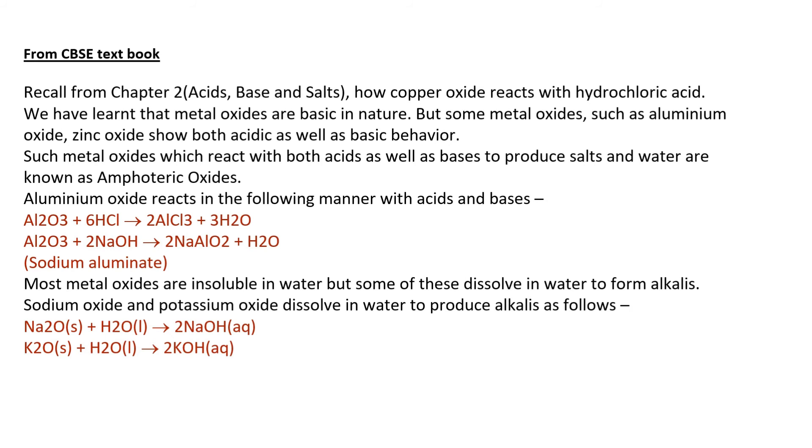Aluminium oxide reacts in the following manner with acids and bases. Now here are the reactions of aluminium oxide with acids as well as bases. So how they will react and how the product and byproduct will form. In both the reactions the byproduct will be H2O and the product will be the salt. Whenever you will take one molecule of Al2O3 plus six molecules of HCl you will get two molecules of AlCl3 and three molecules of H2O as byproduct. And then when you will react Al2O3 with base such as NaOH then you will get two molecules of NaAlO2 plus H2O as byproduct and the product is known as sodium aluminate. Most metal oxides are insoluble in water but some of these may dissolve in water to form alkalis. Sodium oxide and potassium oxide dissolve in water to produce alkalis as follows.